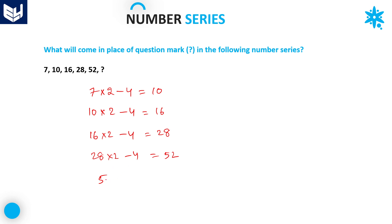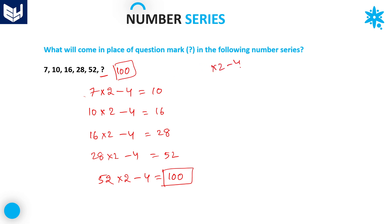Continuing: 28 × 2 = 56, 56 − 4 = 52. So applying the same logic of ×2−4 to the last number: 52 × 2 = 104, 104 − 4 = 100. Therefore, in place of the question mark, 100 should be there. The logic for each and every number is: multiply by 2 and subtract 4.